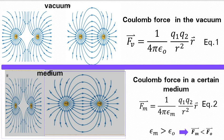Where epsilon naught is the permittivity of vacuum. If we put the charges in another medium, the force between the two charges will be decreased since the permittivity of any medium is larger than the permittivity of vacuum.